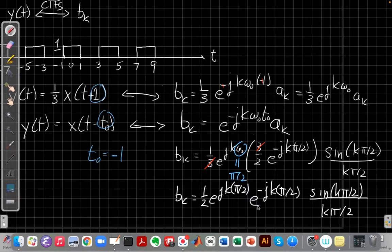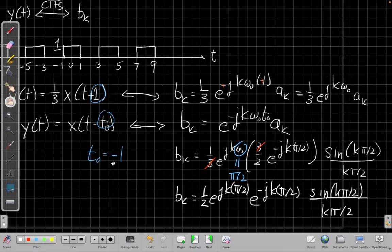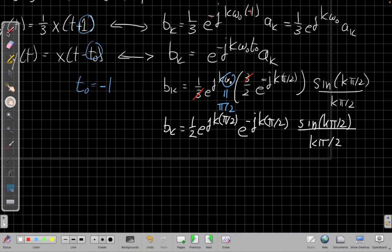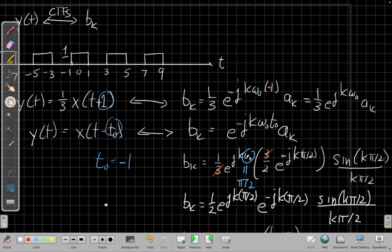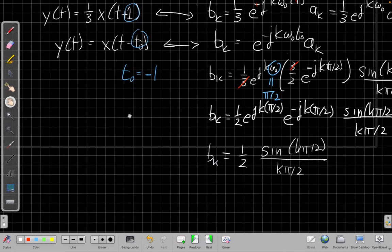So, e to the j k pi over 2 and minus j k pi over 2 cancel each other out. If I multiply these together, I'd add the exponents and get 0, which just becomes 1. And so now I can simplify this and say I get 1 half times the sine k pi over 2 all over k pi over 2. And so this is my Fourier series that corresponds to the signal I had up here at the top.